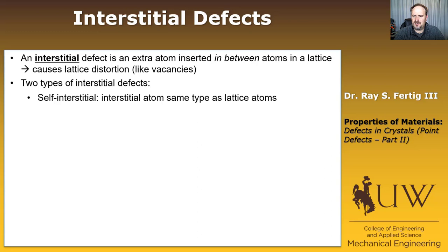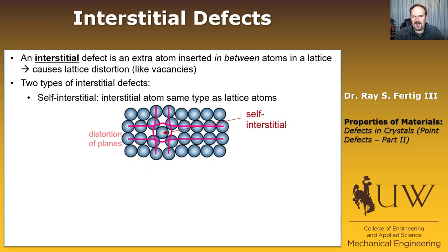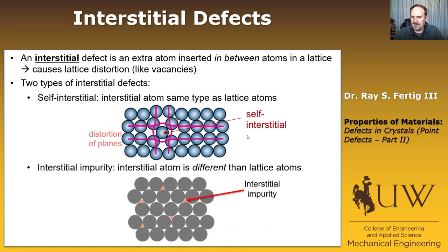An interstitial defect is an extra atom that's inserted in between the atoms in a lattice, and it causes lattice distortion like vacancies. We typically break interstitial defects into two types. The first type is what's called a self-interstitial, where there's an interstitial atom of the same type as what's in the lattice. So what you can see in this picture is if these blue atoms are all the same type of atom, we've now inserted the same atom in between the lattice, and we've forced the other atoms out, and you can see how the lattice planes distort. The other type of interstitial is called an interstitial impurity, and in this case the interstitial atom will be different than the other atoms in the lattice. What you can see is in this case these gray atoms make up the lattice, and these orange atoms are residing as interstitials in the lattice.